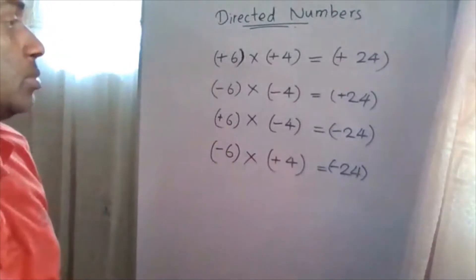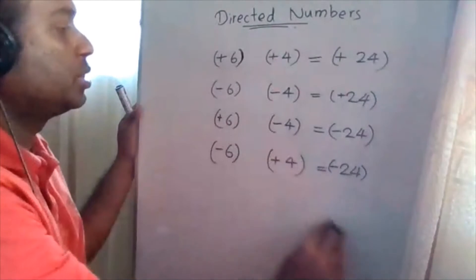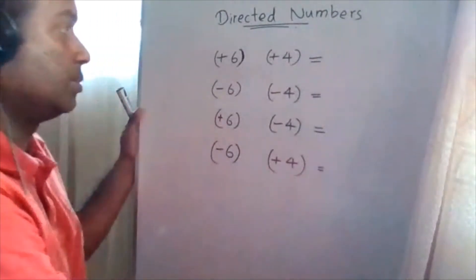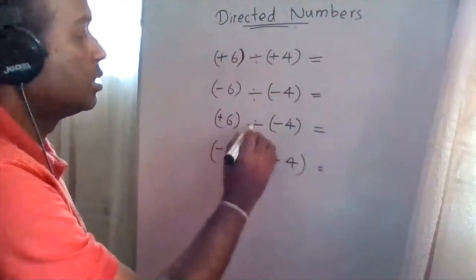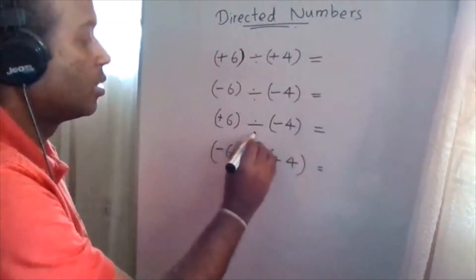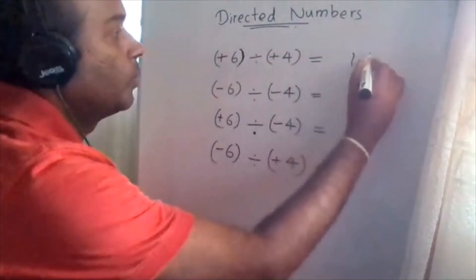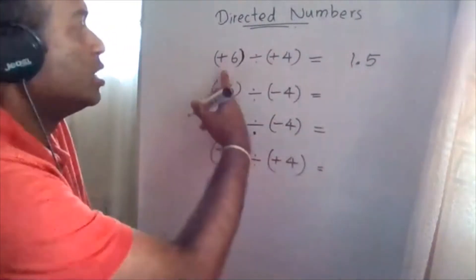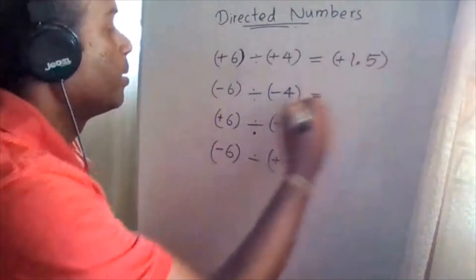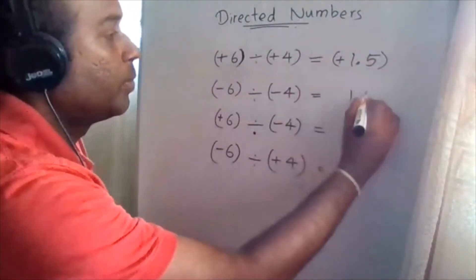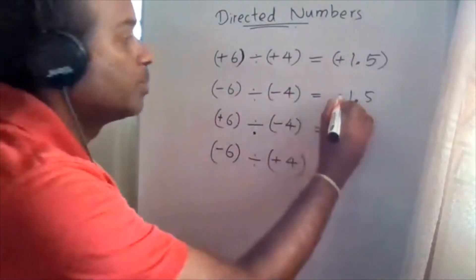For division, the same rules apply. Positive six divided by positive four equals 1.5. Both are positive — same signs — so the answer is positive 1.5. Negative six divided by negative four equals 1.5 as well, because both are in the same signs, so the result is positive.